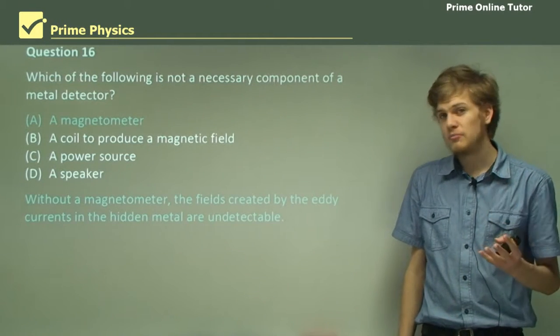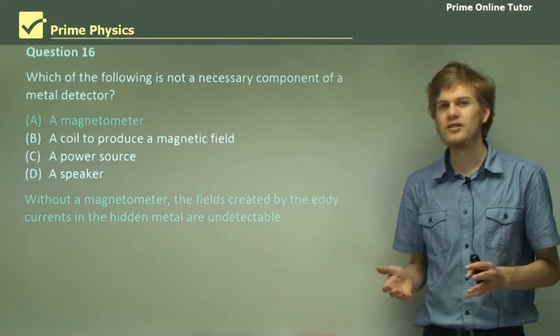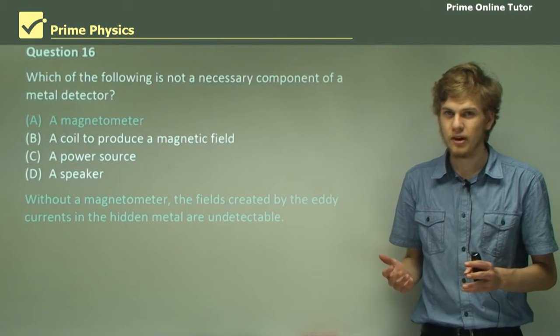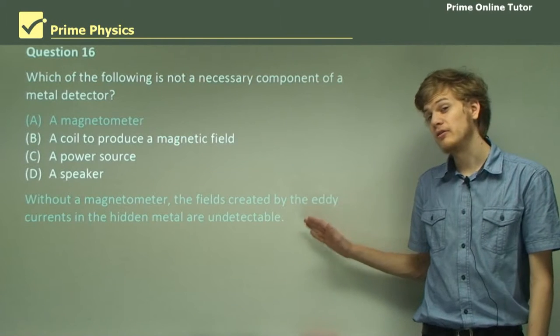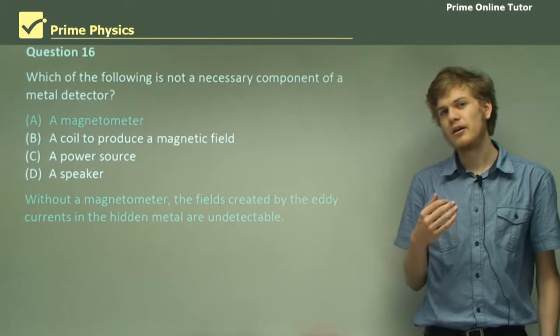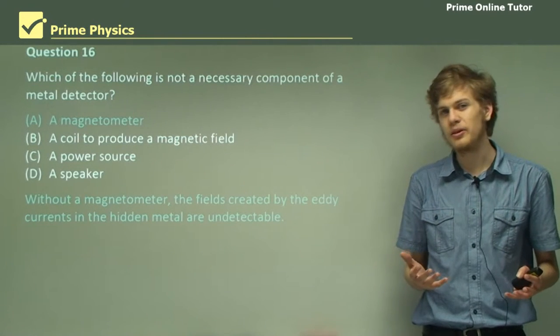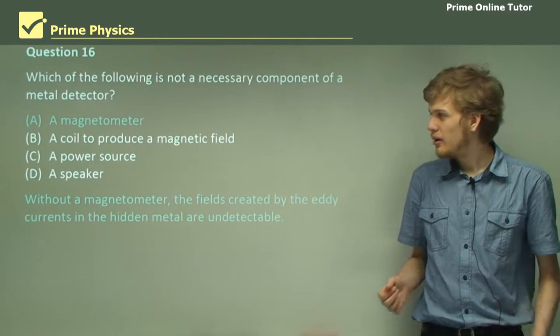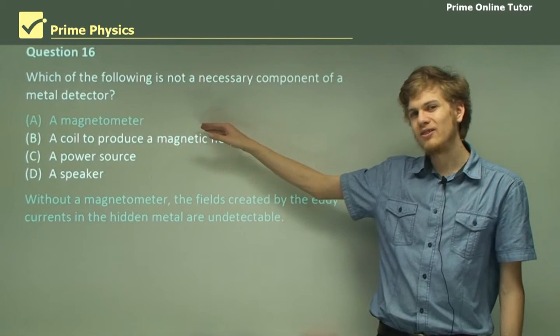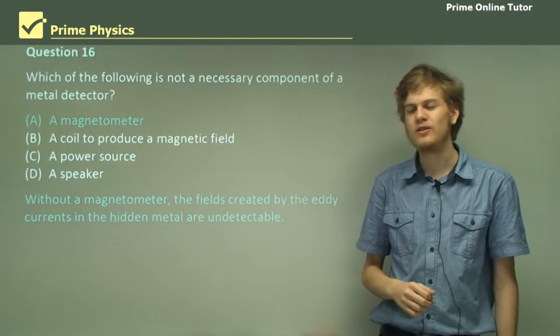Without a magnetometer, we can't detect any change in the magnetic field. If we can't detect change in the magnetic field, we can't notice any eddy currents that are being produced. So without a magnetometer, we cannot detect any changes in the magnetic field.